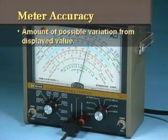A meter's accuracy is the amount that the actual value may vary above or below the displayed value. Accuracy is represented as a percentage. The lower the percentage value, the more accurate the meter.